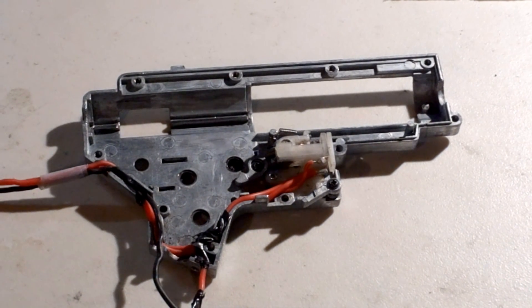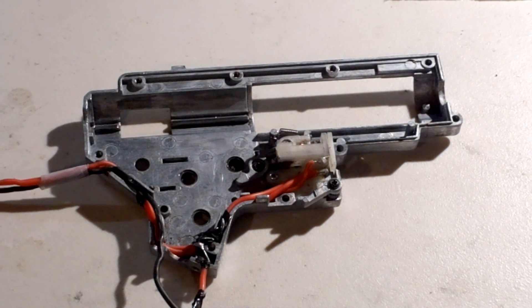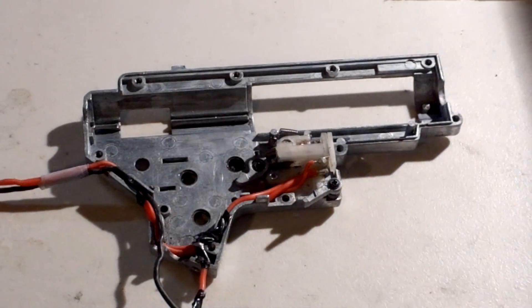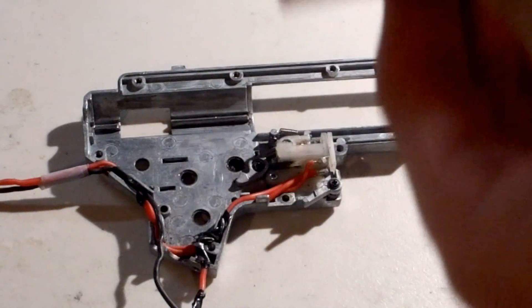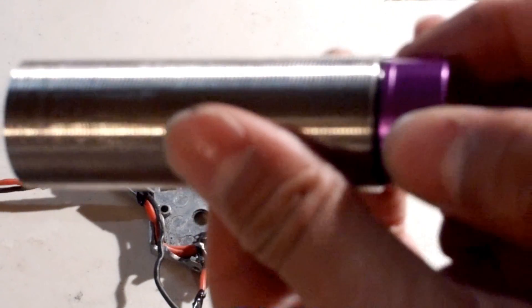Okay, today we will be assembling a version 2 gearbox. The first thing you should probably assemble is the cylinder here and the cylinder head which goes here.